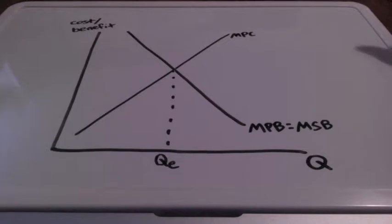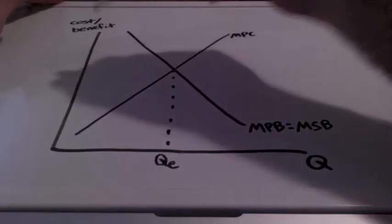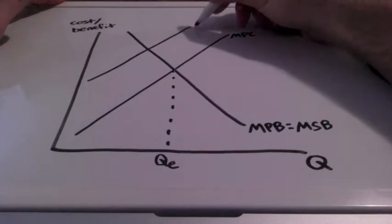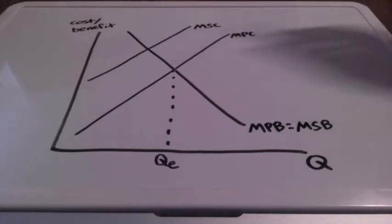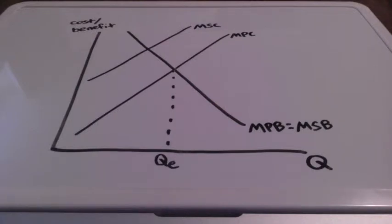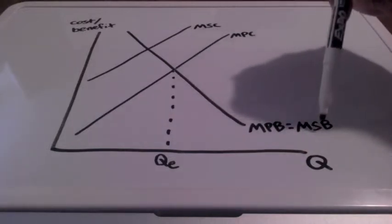Now, if a good has a negative externality, then the cost to society is greater than the cost the consumer is paying for it. When a negative externality exists in an unregulated market, such as pollution, producers do not take responsibility for the external costs that exist, and these external costs represent extra costs on society, which are then passed on to society, and we refer to this as the marginal social cost.